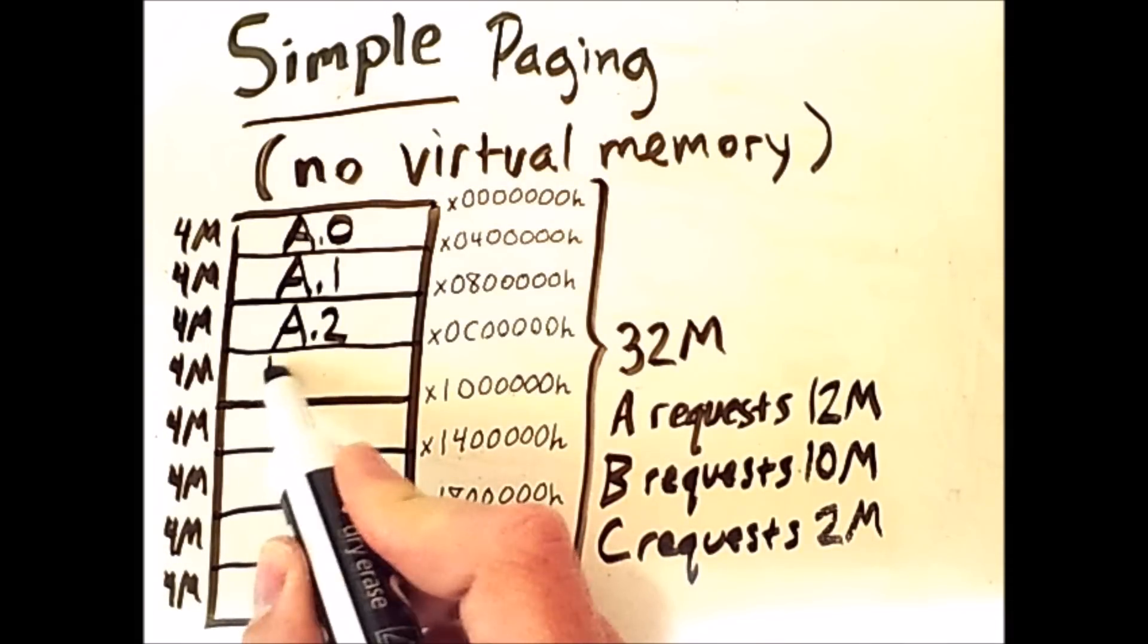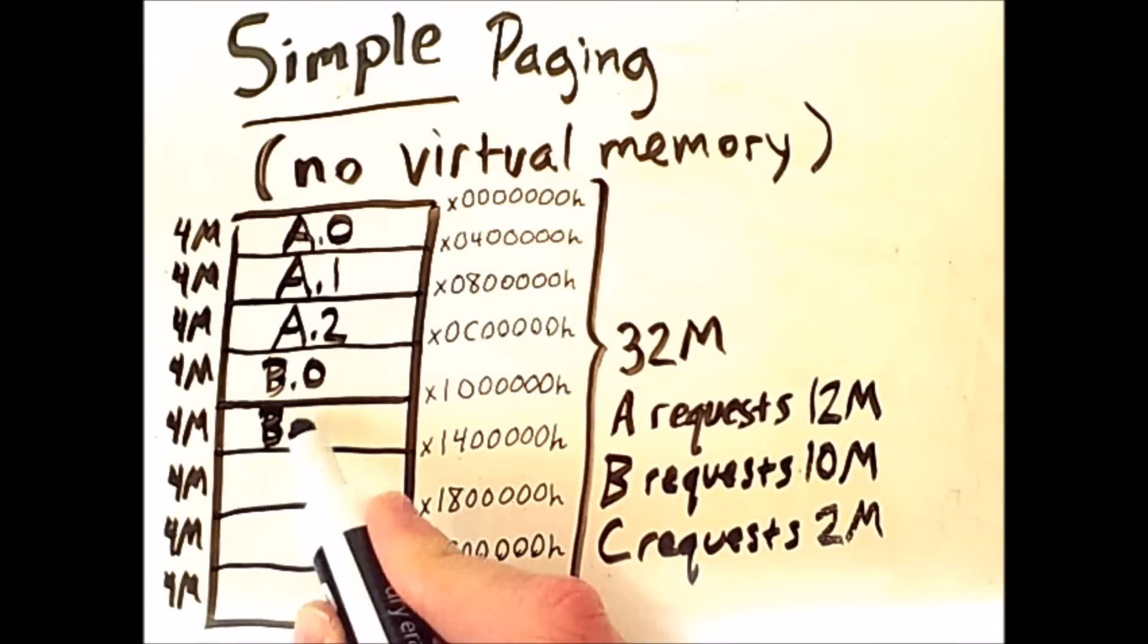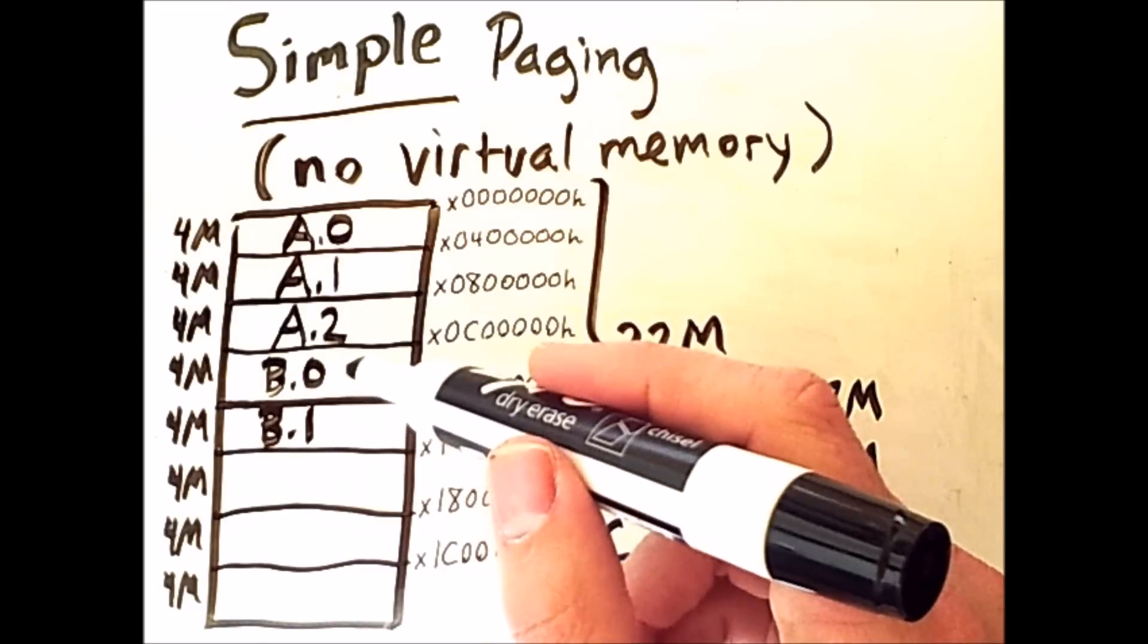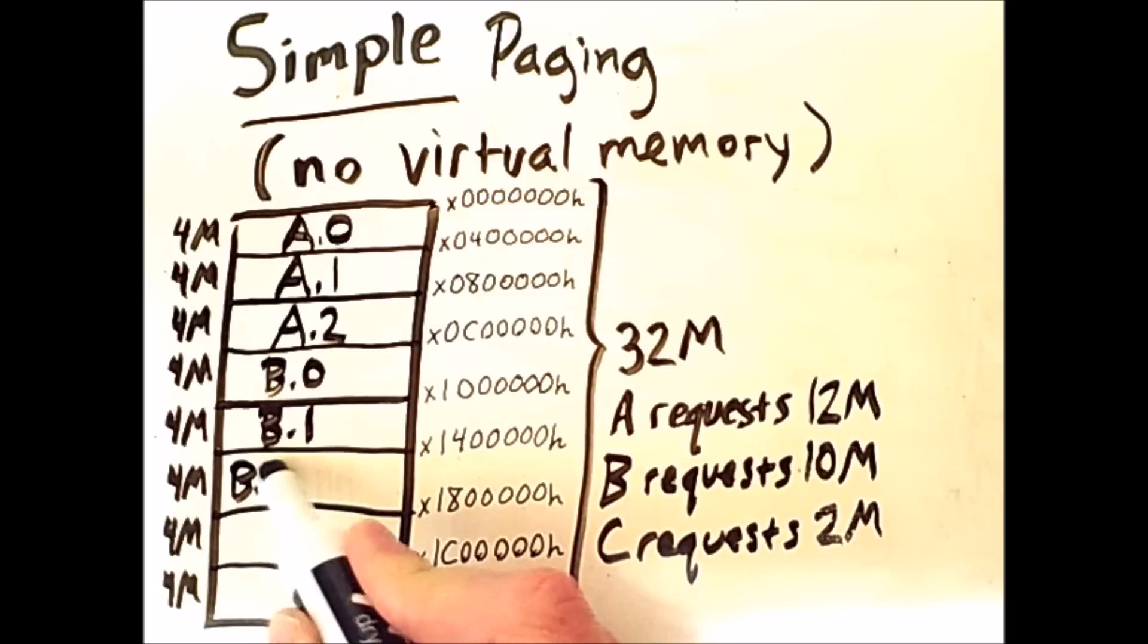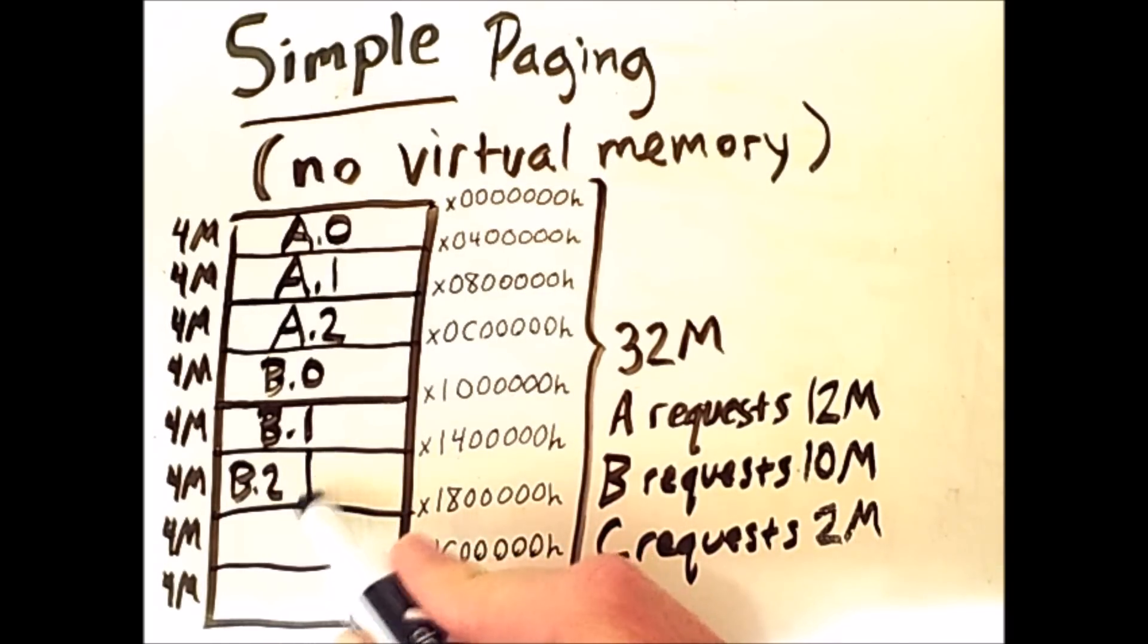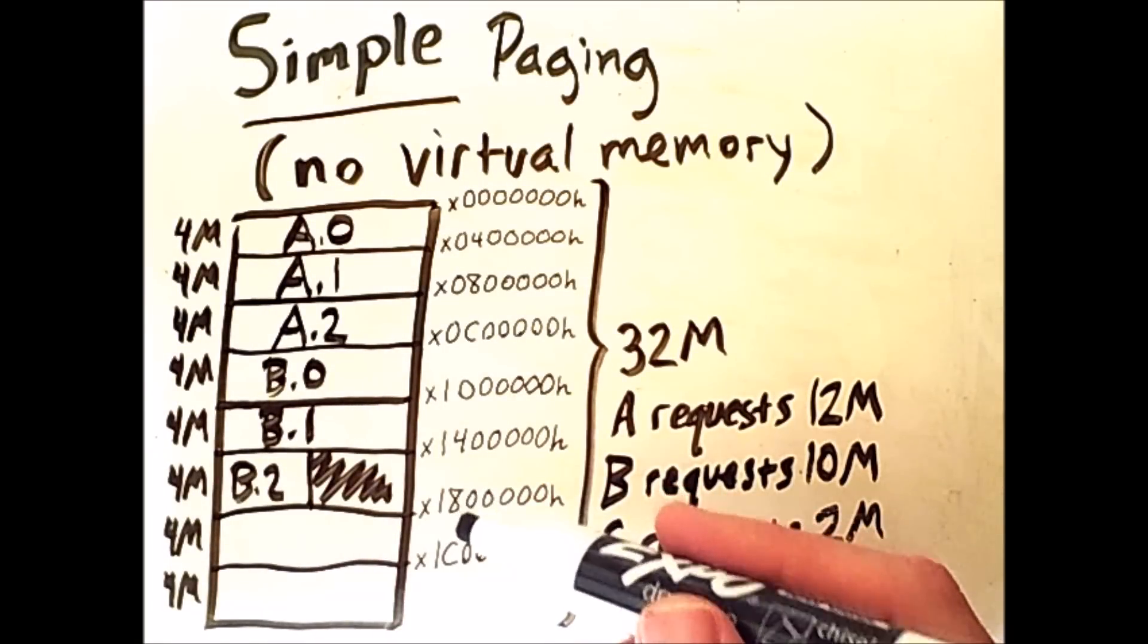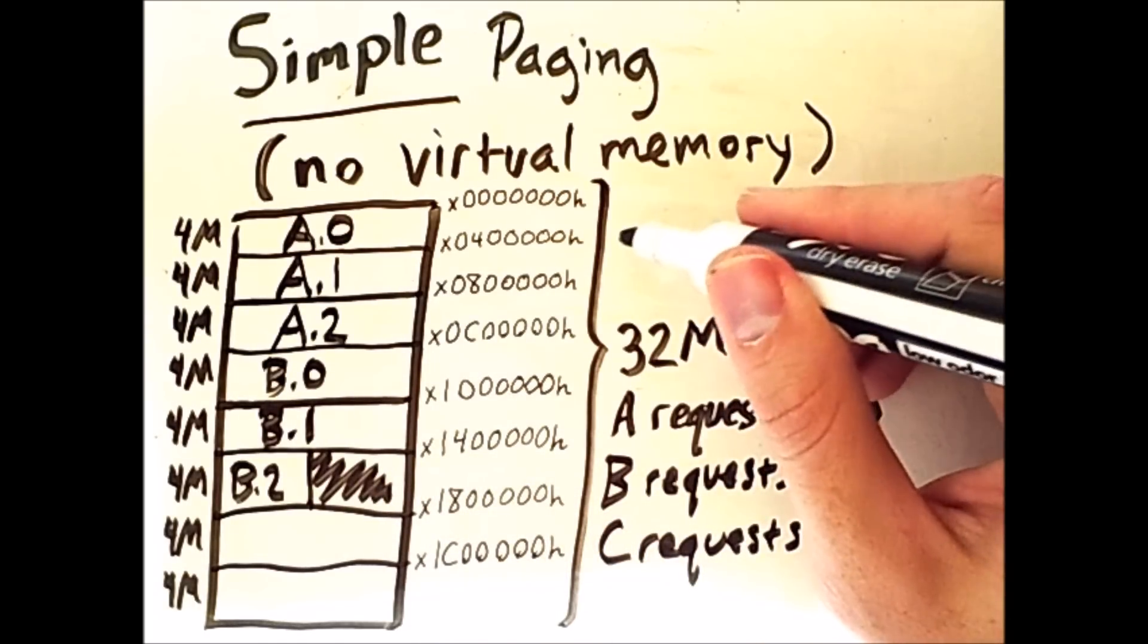The following page of B also has 4 megabytes. So we have 10 megabytes total, we have 4 assigned here, 4 more, that's 8, we now have 2 left. So our third page B2 will only take up half of this last frame. But, as usual, we've assigned this whole frame to process B, so this empty space is another example of internal fragmentation.